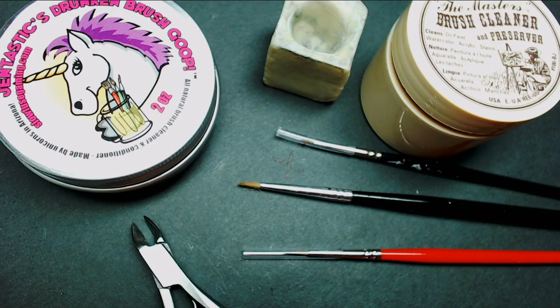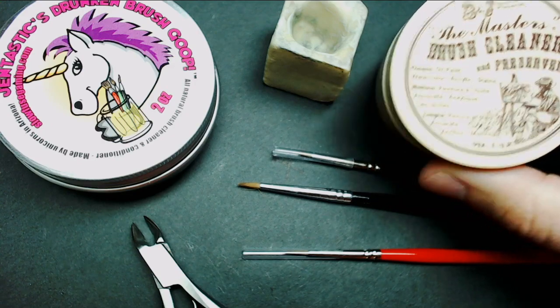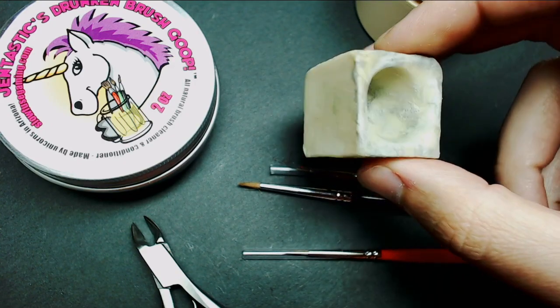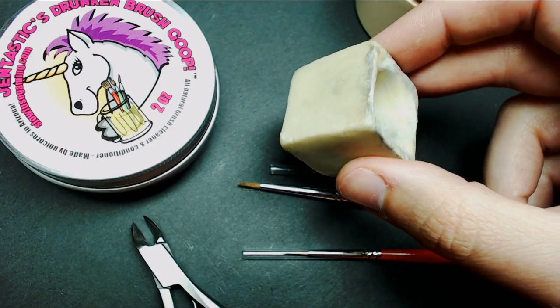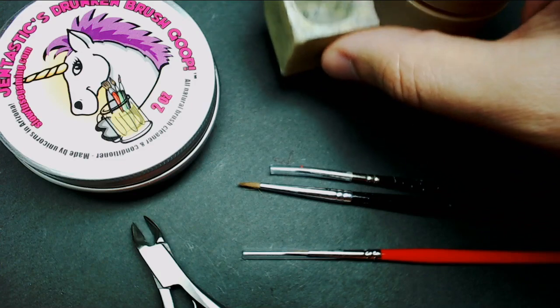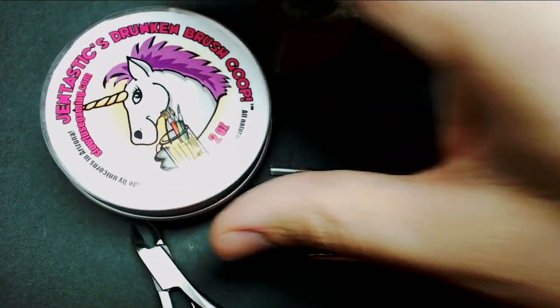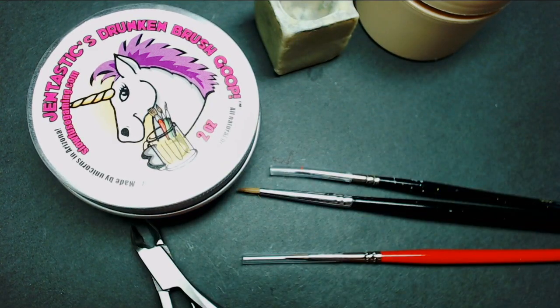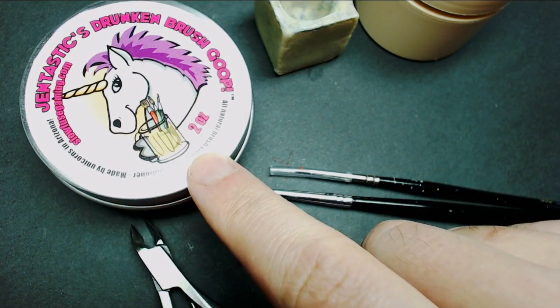As you can see, I've got a few selections of brush soaps. A lot of people talk about the Masters, which you can get on Amazon. This is a different kind of brush soap I got with a brush set - it's literally like a bar of soap for your bathroom, but it's meant for brushes. It's an artist's style hard soap. And then this is my new favorite: Gentastics Drunken Brush Goop, which is available at slowfusegaming.com. I don't get any affiliation or kickbacks, I just like their stuff. This is my favorite by far now.